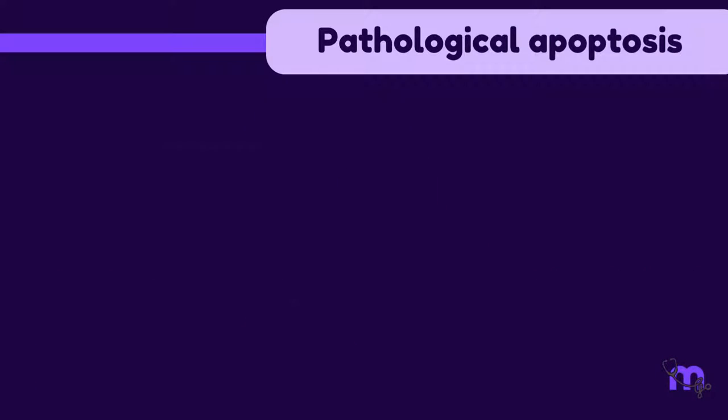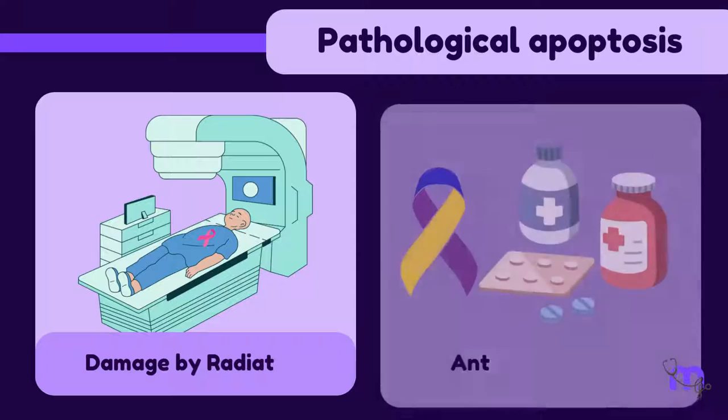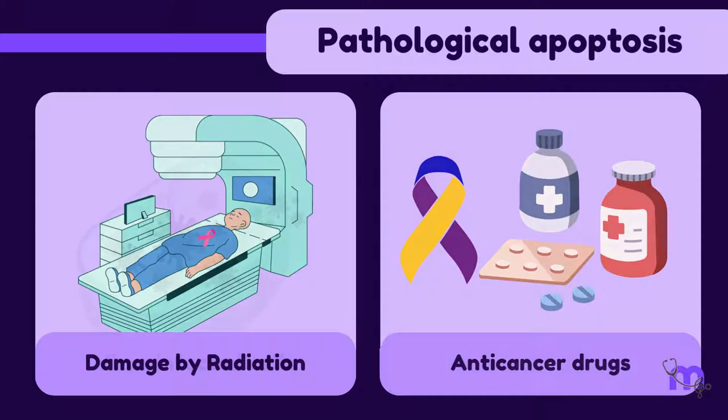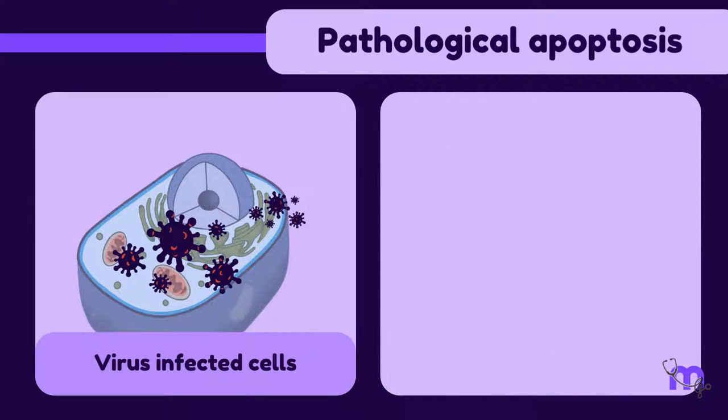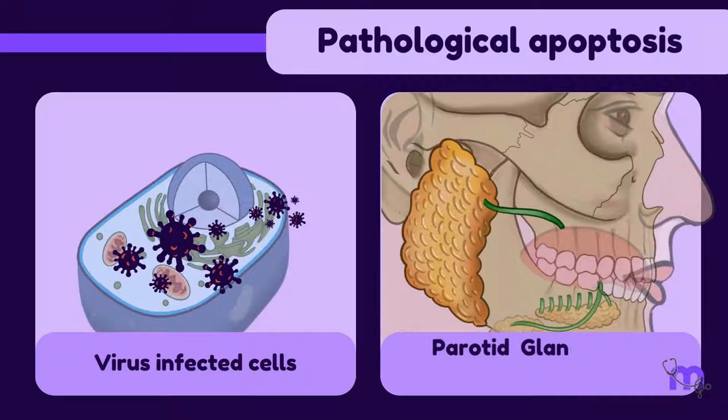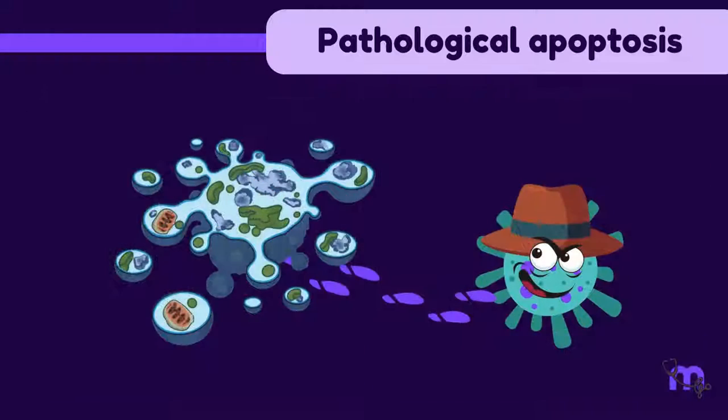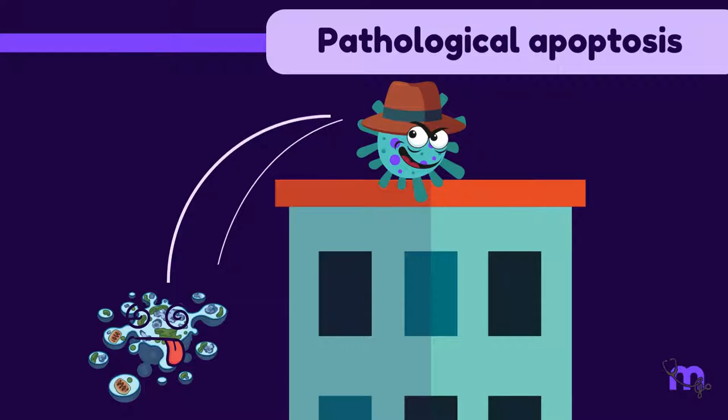Examples are cells damaged by radiation or anti-cancer drugs, virus-infected cells, or parotid gland tissue following duct obstruction. This kind of death is more like a well-planned assassination of a cell.